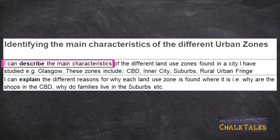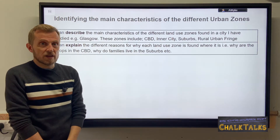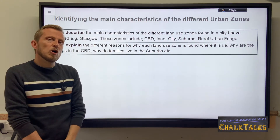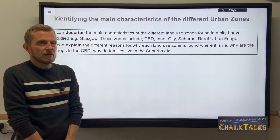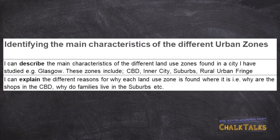You will have studied these in the context of a Scottish city or possibly a city elsewhere. What's important is that you could identify them using a photograph, identify them on a diagram, and most importantly — because it's one of the most common exam questions — identify them on an Ordnance Survey map using map evidence. The second outcome is your ability to explain why they are located where they are.